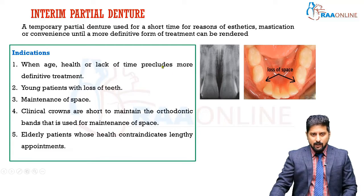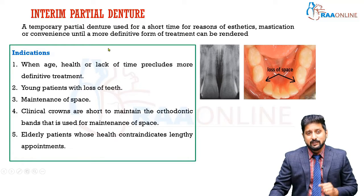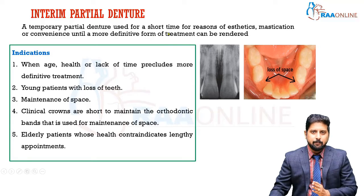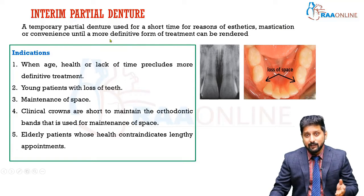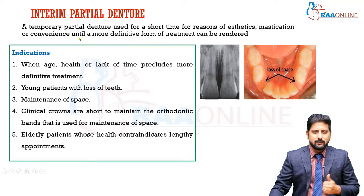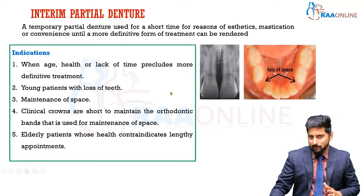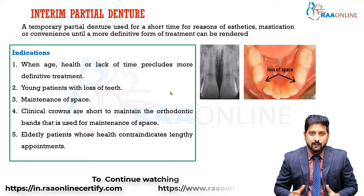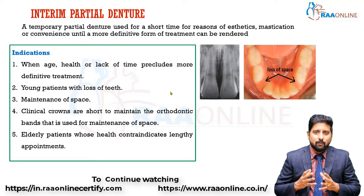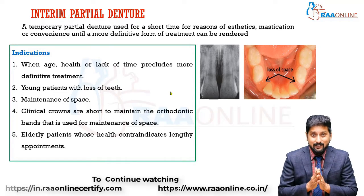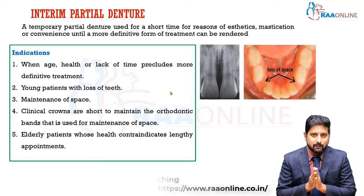The interim partial denture is a temporary partial denture used for a short time for reasons of aesthetics, mastication, or convenience, until a more definitive form of treatment can be rendered. This is the most common type you will fabricate at the undergraduate BDS level — most undergraduate students will fabricate this interim partial denture rather than a removable partial denture with major connector, minor connector, and so on.